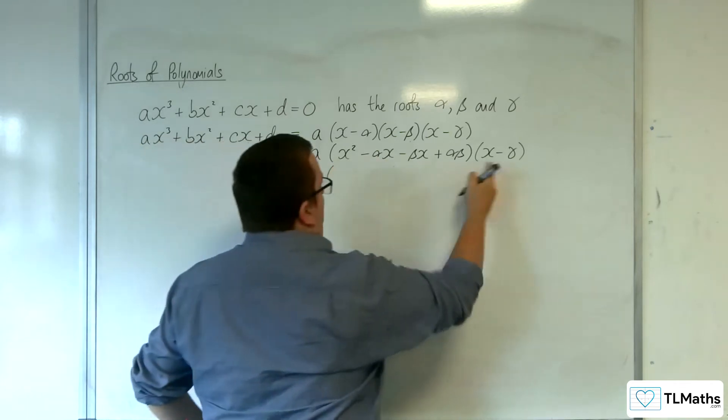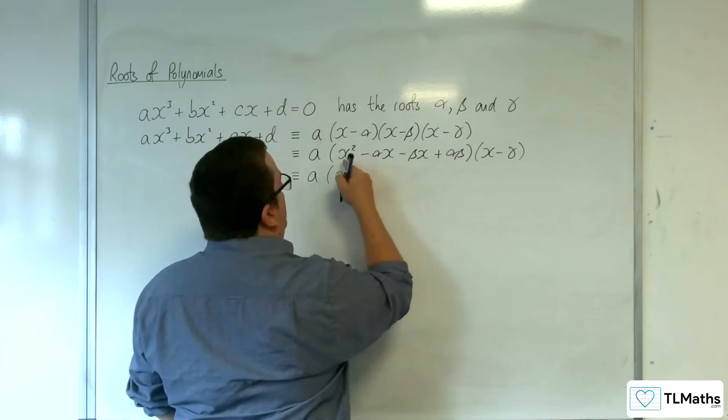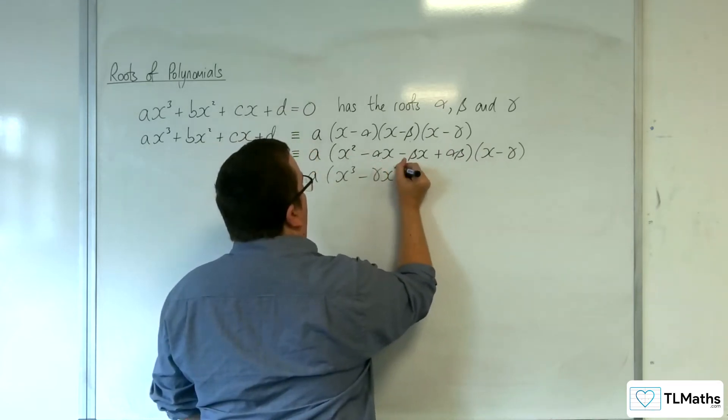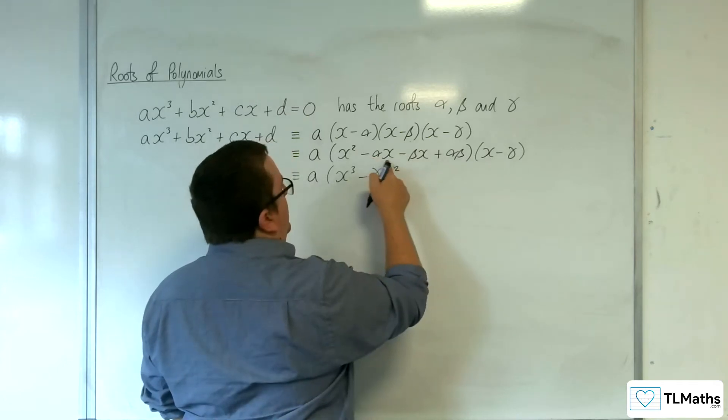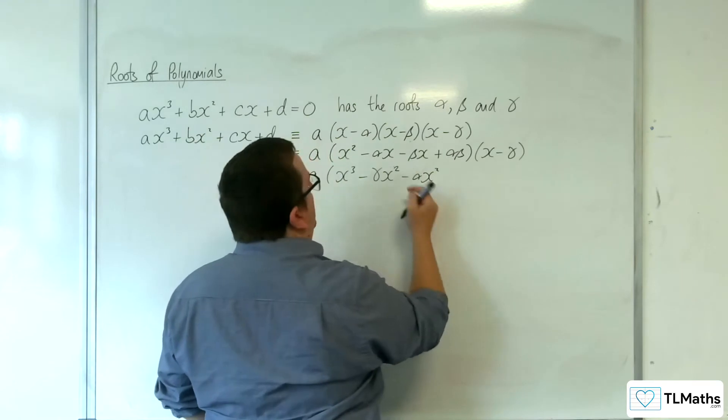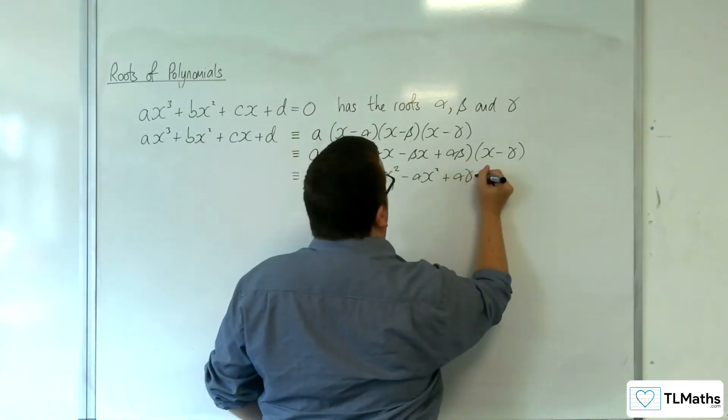Expanding these two brackets now, we've got x² times x, so x³, and x² times -γ, so -γx². Then we've got -αx times x, so -αx². Then -αx times -γ, so +αγx.